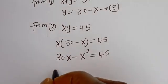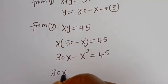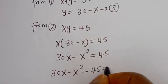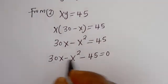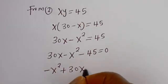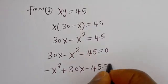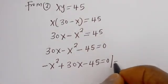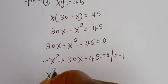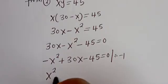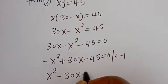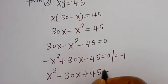Then we have 30x minus x squared minus 45 is equal to 0. Let's put this in standard form: minus x squared plus 30x minus 45 is equal to 0. Dividing all through by minus 1 gives us x squared minus 30x plus 45 is equal to 0.